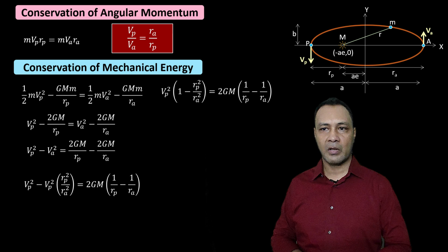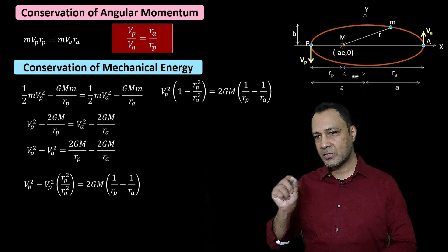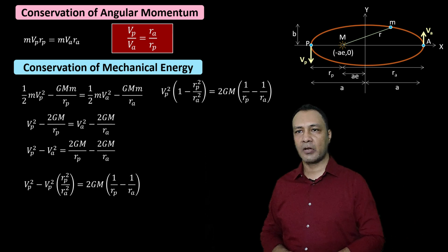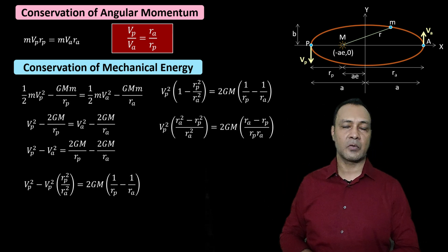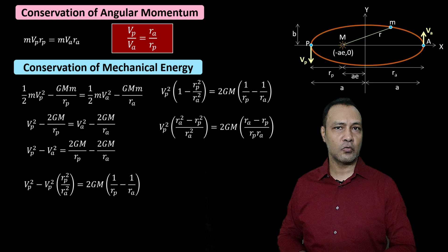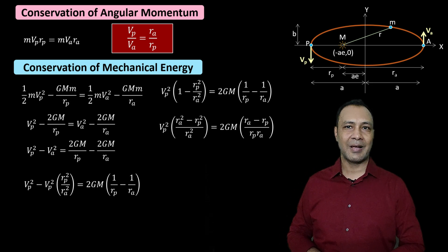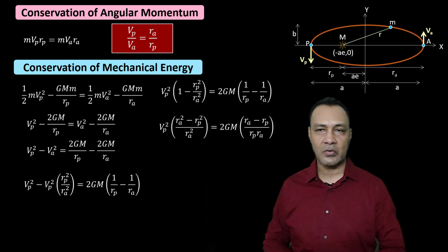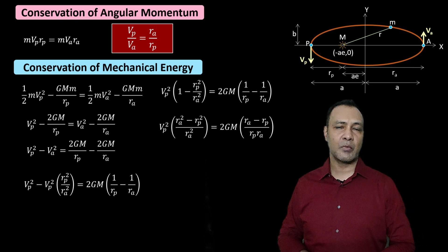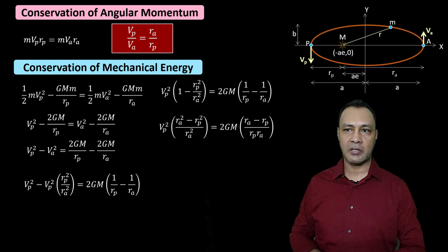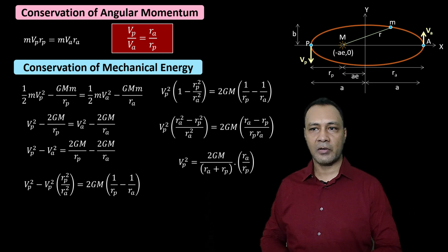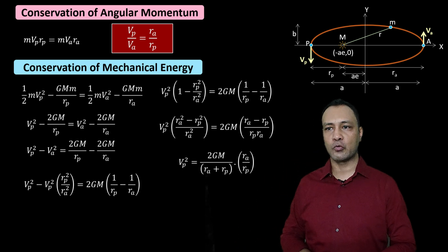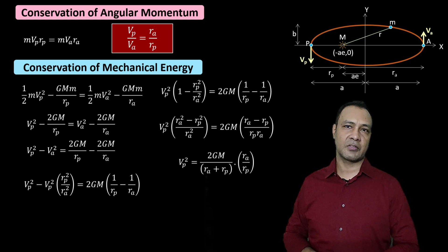Rearranging further: Vp² × (Ra² − Rp²)/Ra² = 2GM × (Ra − Rp)/(Ra·Rp). The factor (Ra² − Rp²) becomes (Ra − Rp)(Ra + Rp), and (Ra − Rp) cancels from both sides. So finally we get the expression for Vp²: Vp² = 2GM / (Ra + Rp) × (Ra / Rp).